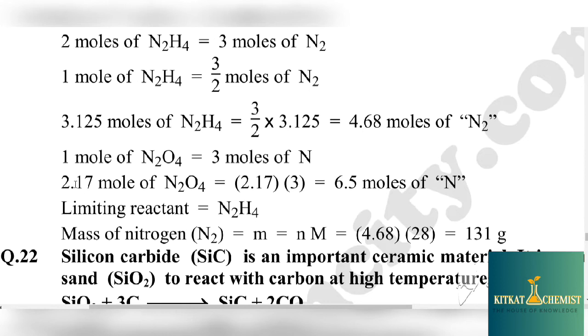Now we have to compare the amount of N2O4. 1 mole of N2O4 produces 3 moles of N. 2.17 moles of N2O4 equals 2.17 times 3, which equals 6.5 moles of N. The limiting reactant is N2H4 because it gives less. We always calculate based on the limiting reactant. To find the mass of nitrogen N2, we multiply number of moles by molar mass. Mass equals n times M equals 4.68 times 28 (14 multiplied by 2 is 28). The answer is 131 gram.